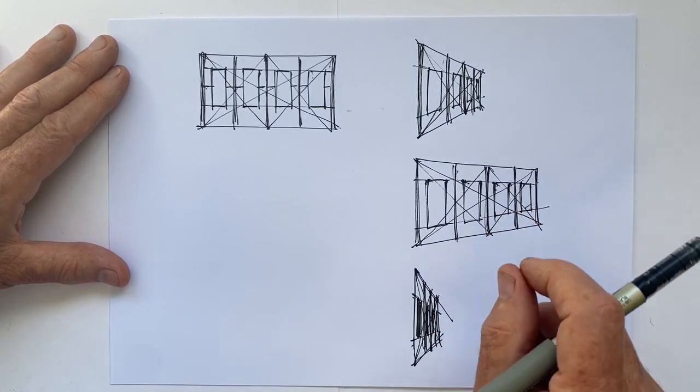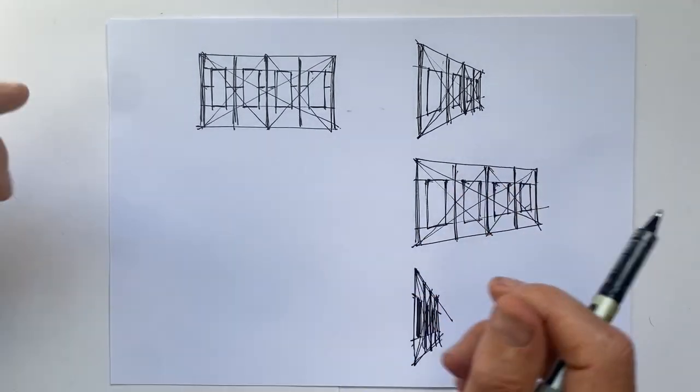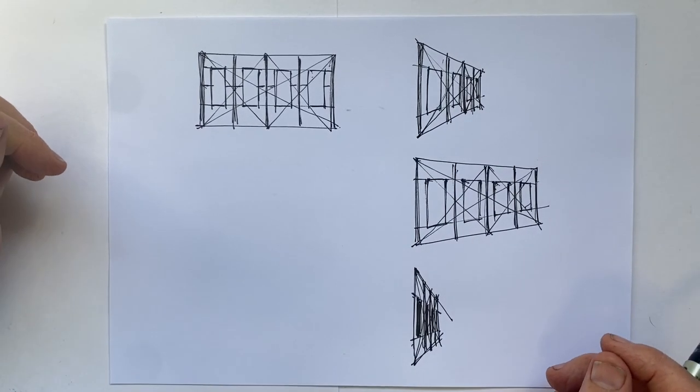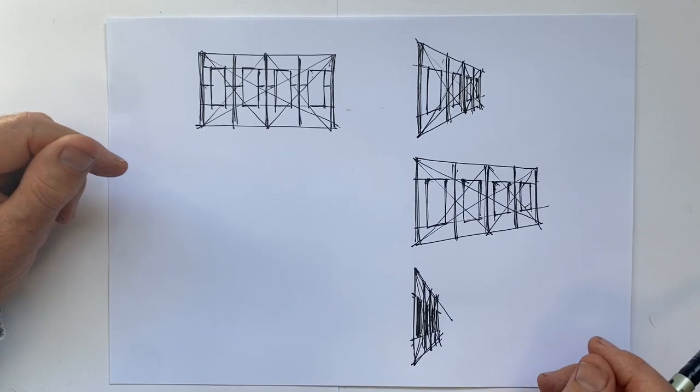And therefore, what we see changes. It doesn't just become narrower. I have another foreshortening video that explains and demonstrates how all that works.